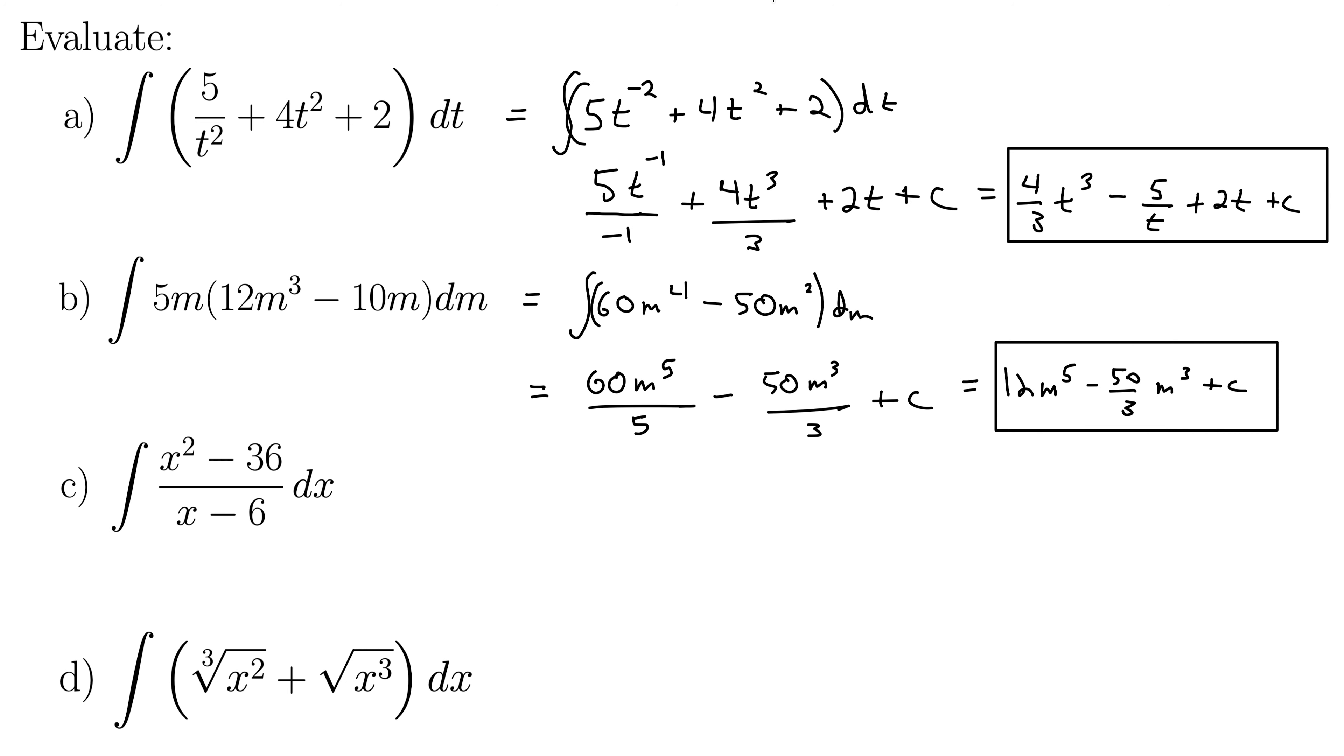Moving on to part c, we have the integral of the quantity x squared minus 36 all over the quantity x minus 6. Now, we don't have any kind of quotient rule for integrals. That's another thing that we don't have for integrals that we did have for derivatives. So that makes integrals challenging. Is there anything else we can do here? Well, yes, let's just do some old school factoring here. So this becomes the integral of x plus 6 up top times x minus 6. And then we get our cancellation divided by x minus 6 dx. And now we can do our cancellation, leaving us simply with the integral of the quantity x plus 6 dx. Much simpler.